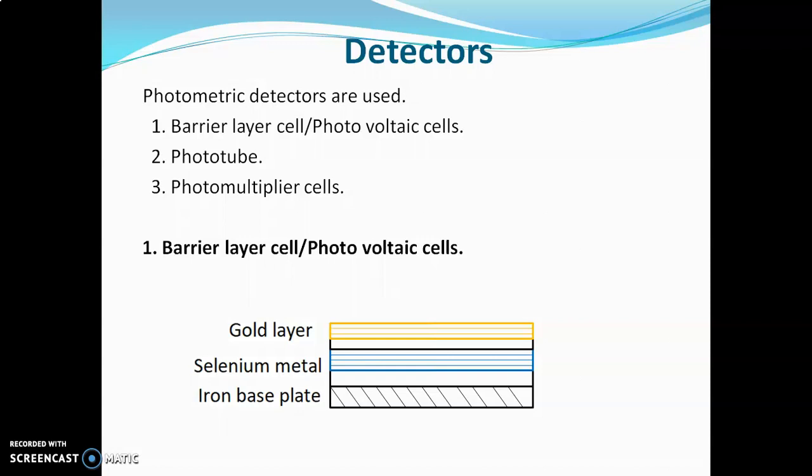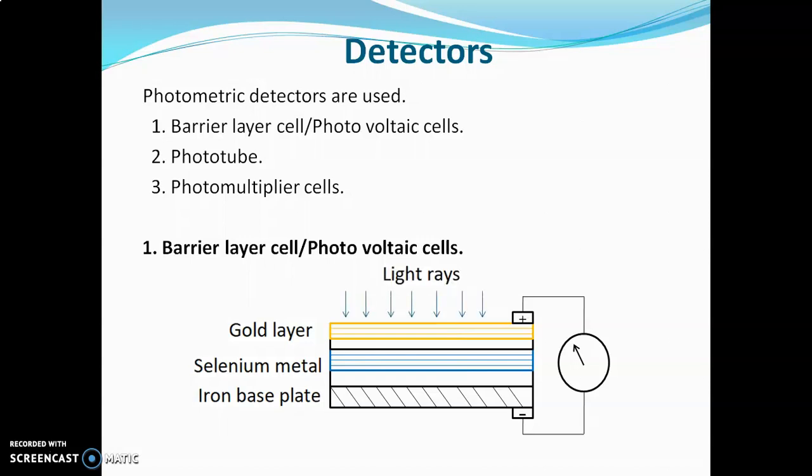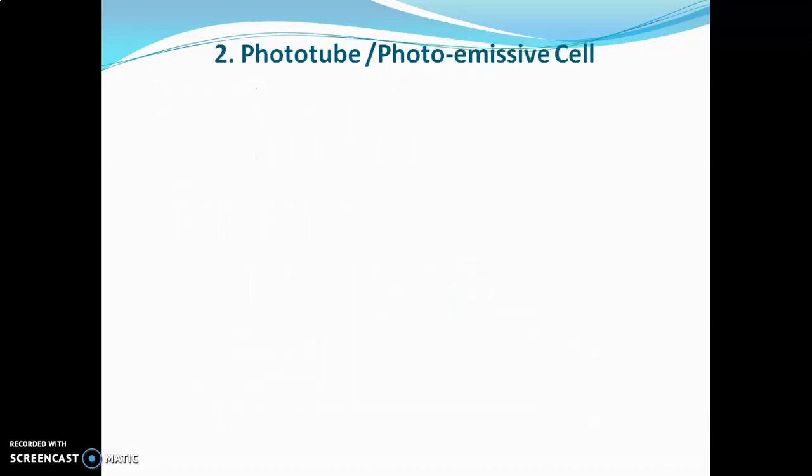Three metal layers are present in the barrier layer cell. When radiations hit the surface of the gold layer, electrons are generated at the interface of gold and selenium. These electrons are attracted towards the gold anode, causing current to flow through the external circuit. This amount of current is measured by a galvanometer, and is directly proportional to the radiations hitting the detector. It is a simple detector used in inexpensive instruments.